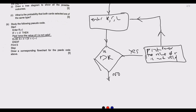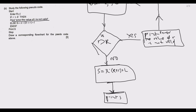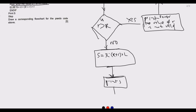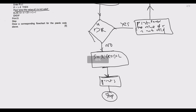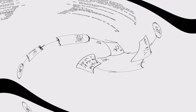If the answer is No, we proceed to calculate S equals pi multiplied by (capital R plus small r) multiplied by L. Once we calculate that, we display the result on screen by printing S. After printing S, we have achieved what we set out to do, so the next step is Stop. This completes the flowchart for question 6b.